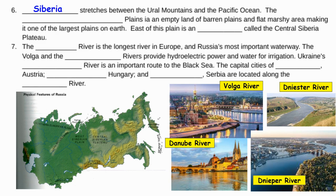Siberia stretches between the Ural Mountains and the Pacific Ocean. The Western Siberian Plains is an empty, barren, very flat and marshy land, making it one of the largest plains on Earth. East of the plains is an upland called Central Siberia — it's kind of a plateau with higher elevation and a little more rocky. If you take a look at the map, you can see the plains, and as you head east it becomes incredibly rocky as you approach the Pacific coast.